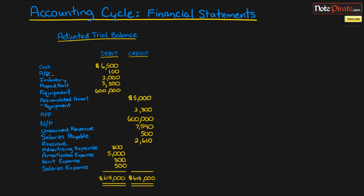In the previous presentation we created the adjusted trial balance, listing all the different accounts of the company with their debit and credit balances, working through assets, liabilities, equity accounts, revenues, and expenses. Now we're moving on to the second-to-last step of the accounting cycle, which is preparing financial statements — giving us a readable and understandable view of the company as a snapshot to see how they're doing.